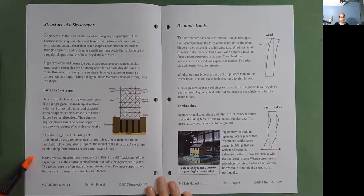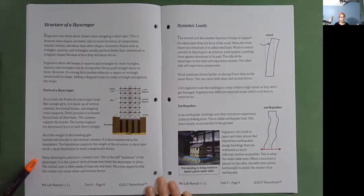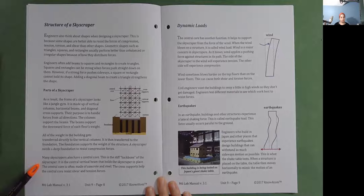Many skyscrapers also have a central core. This is the stiff backbone of the skyscraper. It is the central vertical beam that holds the skyscraper in place. The central core is often made of concrete and steel. The cross supports help the central core resist shear and tension forces.